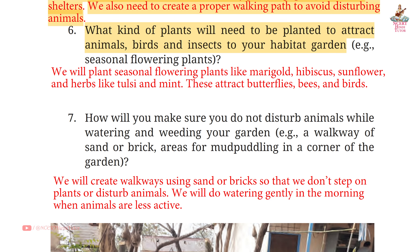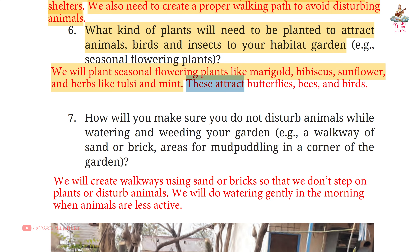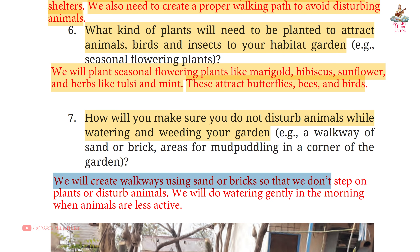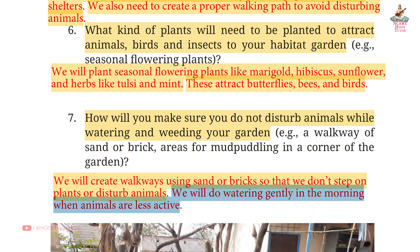Answer: We will plant seasonal flowering plants like marigold, hibiscus, sunflower, and herbs like tulsi and mint. These attract butterflies, bees and birds. Question 7: How will you make sure you do not disturb animals while watering and weeding? Answer: We will create walkways using sand or bricks so we don't step on plants or disturb animals, and do watering gently in the morning when animals are less active.